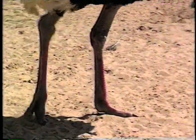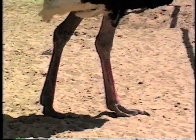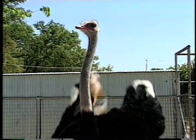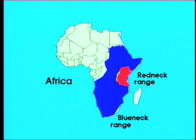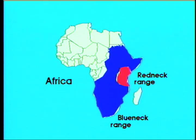Males of both subspecies exhibit a reddening of the legs and beak at the onset of breeding season. The red-neck ostriches are primarily limited to East Africa, with the blue necks inhabiting large regions from the Arabian Peninsula to the southernmost tip of the continent.